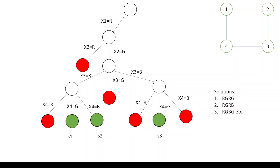In this way, we can find different solutions for the graph coloring problem using a state space tree. The three solutions found are: red, green, red, green; red, green, red, blue; and red, green, blue, green. This is how we trace solutions to a graph coloring problem using a backtracking strategy with a state space tree. Thank you for watching — kindly subscribe to the channel.